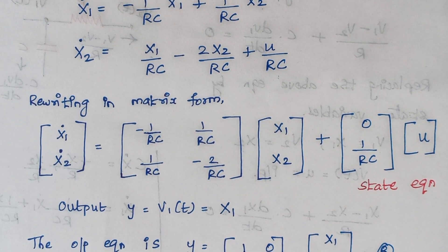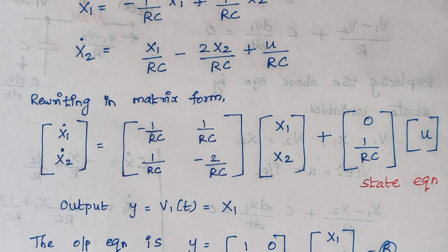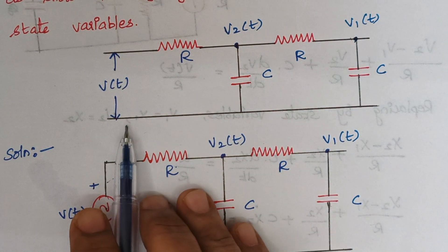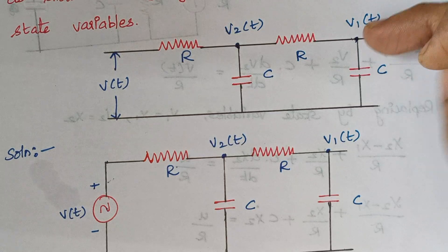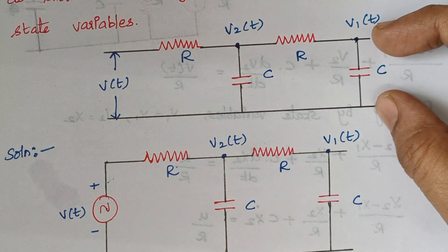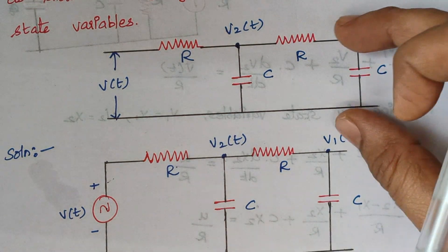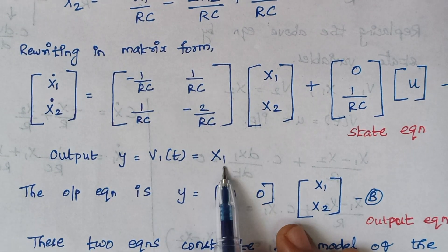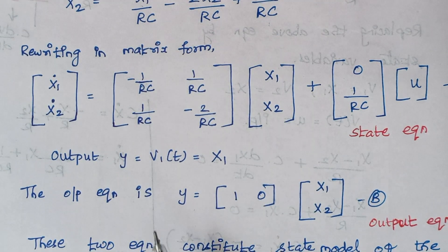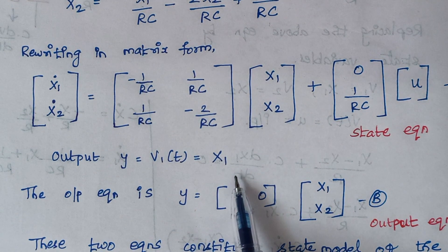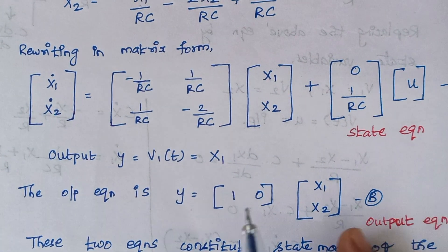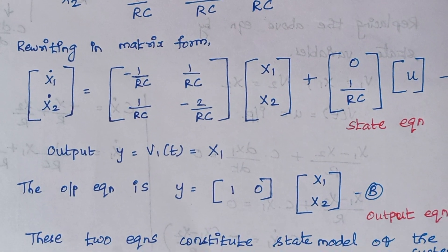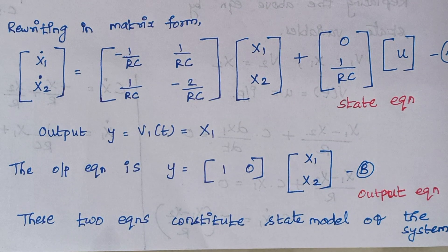Next, we frame an expression for the output. Looking back at the circuit diagram, the voltage across the capacitor is the output voltage, which is V1(t). So output Y = V1(t) = X1. Writing the output equation: Y = [1  0] · [X1; X2], where the coefficient of X1 is 1 and there is no X2 term so it is 0. These two matrices together constitute the state model of the system.